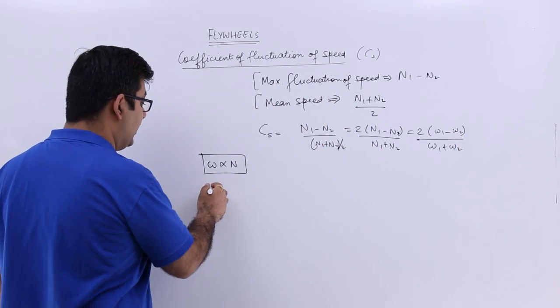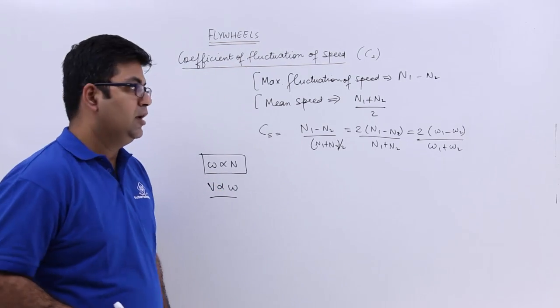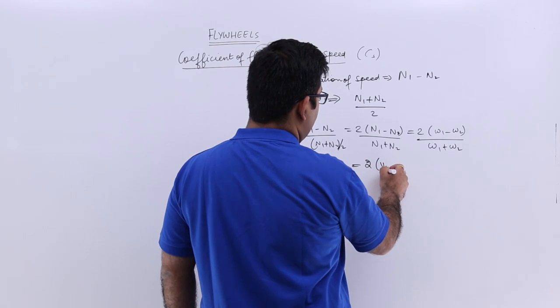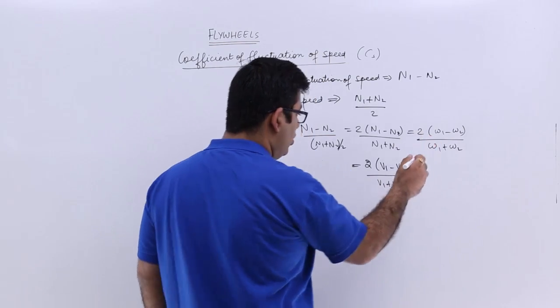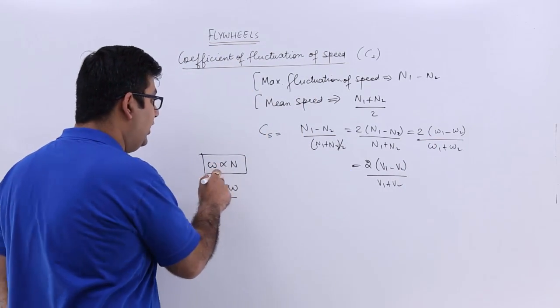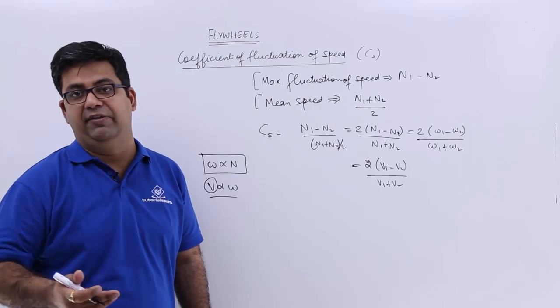Similarly, you can say that v is proportional to omega. So I can replace omega by v. So you will have 2 into v1 minus v2 upon v1 plus v2. For those of you who are thinking about it, what is this v? This is the linear speed or the circumferential speed of the flywheel.